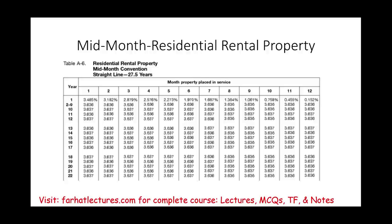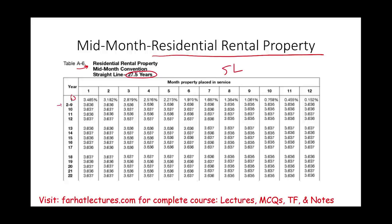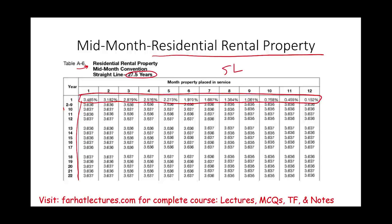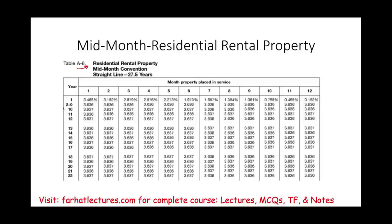We have a different schedule for the residential and non-residential. This is the residential rental property — notice it's 27 and a half years, mid-month convention, straight-line method. Notice the first year, we're going to have a partial depreciation. The rate varies by month: January, February, March, April, May — this is year one. From year two to year 27, it's 3.636% (or 3.637% due to rounding) — basically the same straight-line amount every year for a full year. However, year one will be prorated because it's a partial year, but the computation has been done for you. We'll work an example illustrating how to use this.